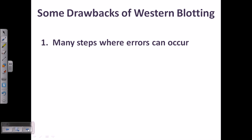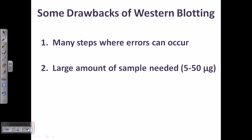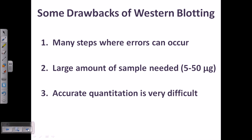Some drawbacks of western blotting: as the number of steps increases, the chance of error increases — more steps mean more potential mistakes. A large amount of sample is needed — approximately 5 to 50 micrograms for proper detection. Accurate quantitation is very difficult due to the many small steps. Overall it is a very time-consuming protocol, needing 4 to 5 days to get results, and results do not always come out successfully.